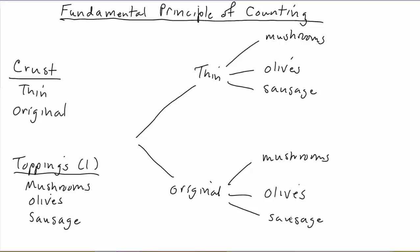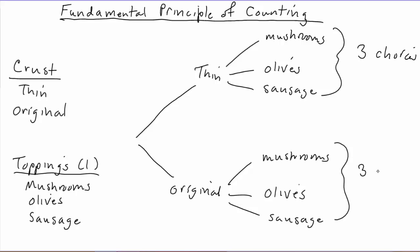If we look at the decision tree we wrote out, how could we have come up with six without writing out all these examples? You can notice there are basically two groups: a thin crust group and an original crust group. And in each group, there are three toppings — three choices here and three choices here. So we have two groups, each with three things in them.